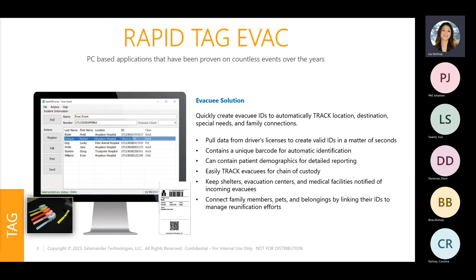RapidTag EVAC is a PC-based solution that allows you to quickly register impacted people by scanning their driver's licenses or other acceptable IDs and then printing them an ID tag, whether that is a wristband — we have all different colors — a three by five label, or a hard card on your two by three cards. The tag contains an interoperable QR code that can be scanned into the track app as well as into command to track their movements, such as if they need to get transferred to an alternate location, a medical facility, or a family center. For long-term evacuee support, the track app can also be used to check people in and out of the site for accountability. RapidTag EVAC can also track household pets and belongings, and you can link them to their owners to manage the unification process.